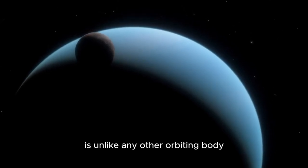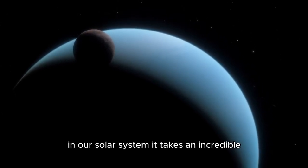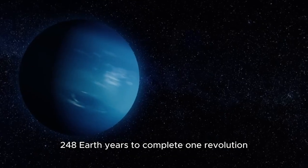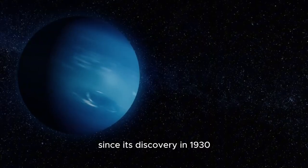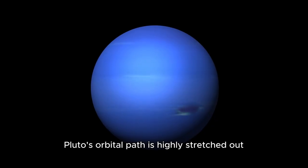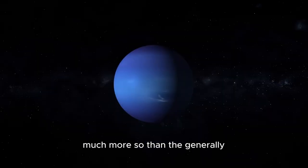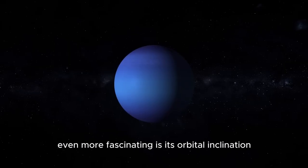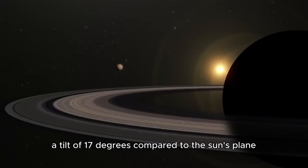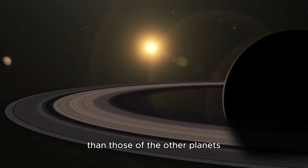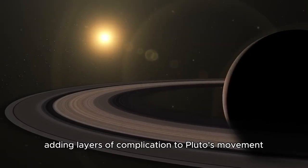Pluto's journey around the Sun is unlike any other orbiting body in our solar system. It takes an incredible 248 Earth years to complete one revolution. Since its discovery in 1930, it hasn't even made one full orbit. Still, the intrigue doesn't stop there. Pluto's orbital path is highly stretched out, much more so than the generally circular paths of the main planets. Even more fascinating is its orbital inclination, a tilt of 17 degrees compared to the Sun's plane. This trajectory is far more irregular than those of the other planets, adding layers of complication to Pluto's movement.